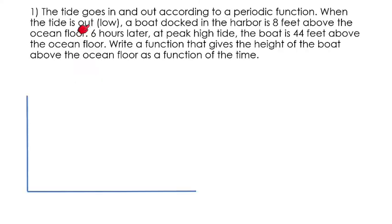So the first thing we're looking at is this one. It says the tide goes in and out according to a periodic function. When the tide is out, which is low, a boat docked in the harbor is 8 feet above the ocean floor. But 6 hours later, at peak high tide, the boat is 44 feet above the ocean floor. Write a function that gives the height of the boat above the floor as a function of the time.